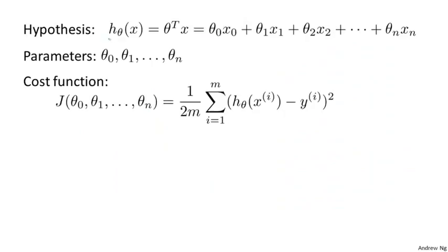To quickly summarize our notation, this is a form of hypothesis in multivariate linear regression, where we've adopted the convention that x0 equals 1. The parameters of this model are theta 0 through theta n.